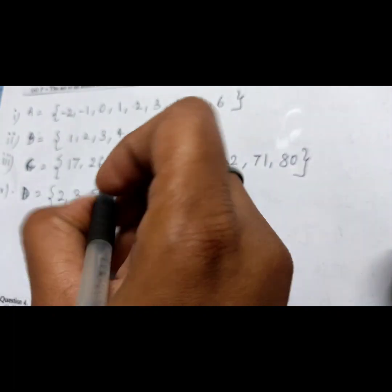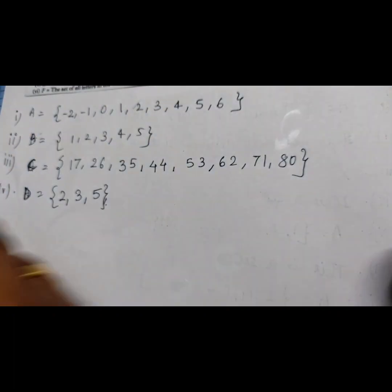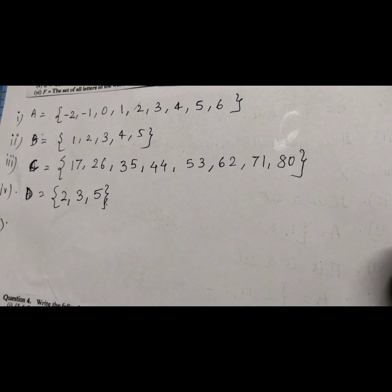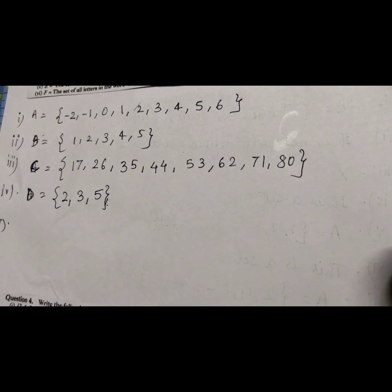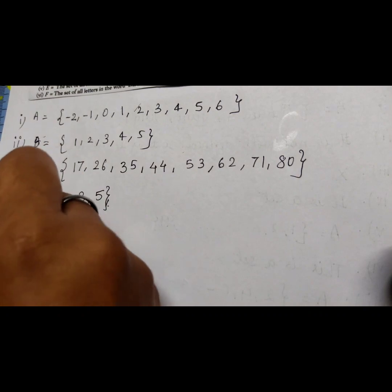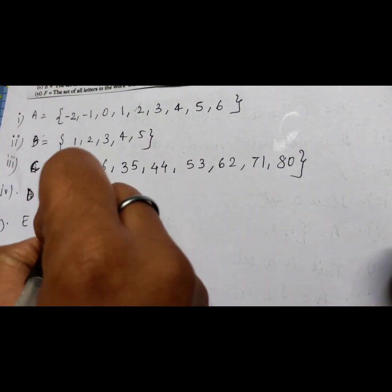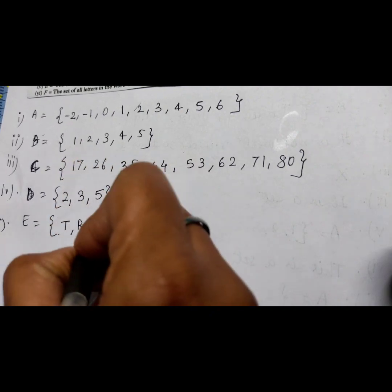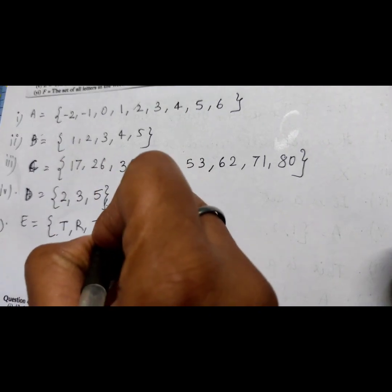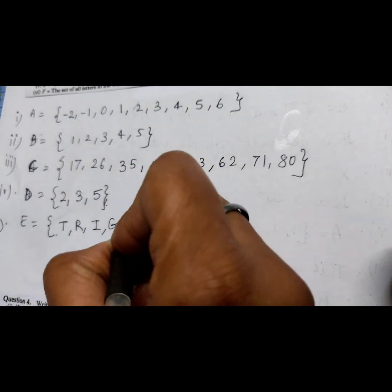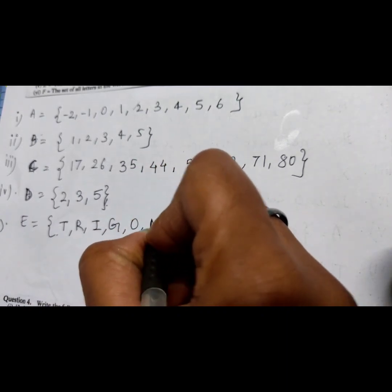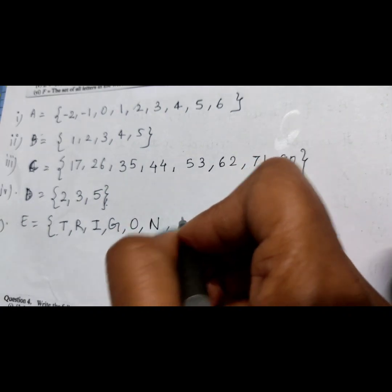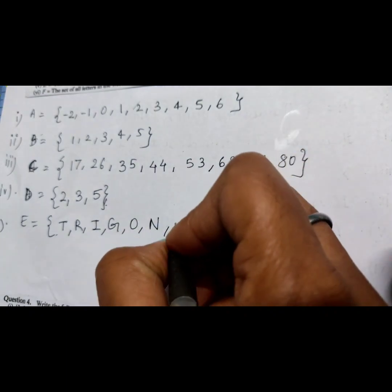The fifth part: the set of all letters in the word TRIGONOMETRY. Going through the letters: T, R, I, G, O, N, O, M, E, T, R, Y — but we do not repeat letters in a set, so each letter is written only once. The set E = {T, R, I, G, O, N, M, E, Y}.